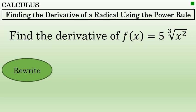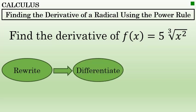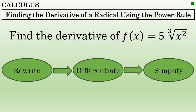First, you should rewrite the function in an equivalent form so that instead of the variable being under a radical sign, it's written as the base of an exponent. Second, you should differentiate using the power rule. And finally, perform any simplifications needed so that your final answer is in simplest form.